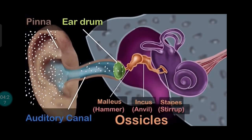And that brings us to the inner ear. The inner ear consists of a bony structure shown in purple. The top part of this structure consists of three semi-circular rings that help us in maintaining our balance when walking, dancing, or whatever we do. They're not involved in hearing, so not so important for us right now.